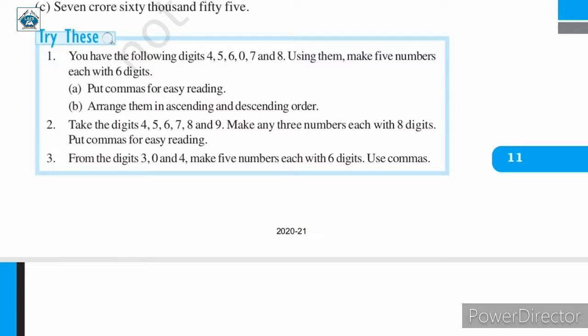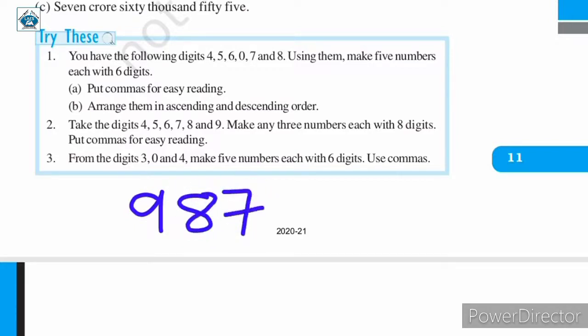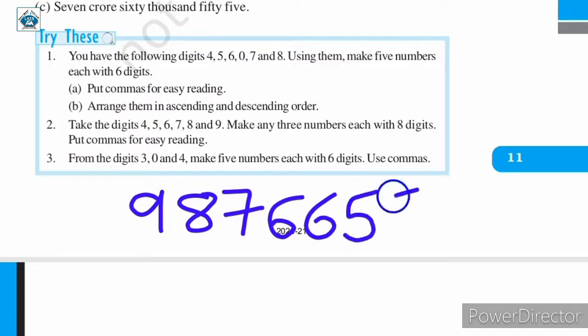You can start with any digit. You can begin with nine: nine, eight, seven, six, six, five, five, four. Putting commas, here we have nine crore, eighty-seven lakh, sixty-six thousand, five hundred fifty-four.